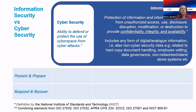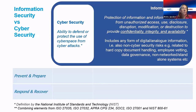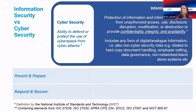Information security is a much broader concept — it includes cyber security but also covers things like how people handle printed information, movable media such as USB sticks and thumb drives, hiring and firing policies, and disaster recovery. Central to this is the CIA triangle: confidentiality, integrity, and availability — which ISO 27001 talks about extensively.